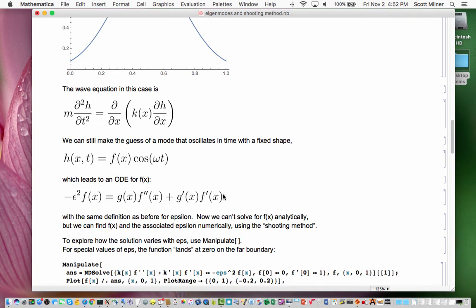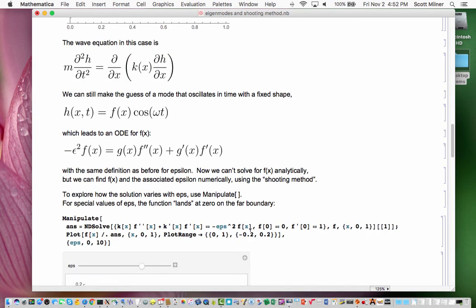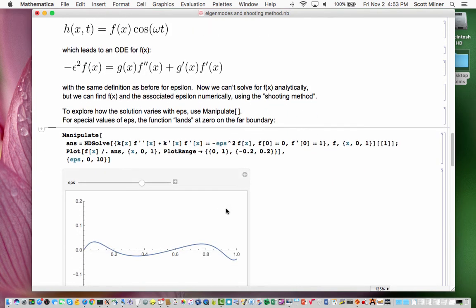so that those solutions satisfy the boundary condition on the far end. And this is the shooting method. So the idea is we solve this, which should be a boundary value problem in which f is 0 on both ends. We solve it as an initial value problem where we take f of 0 equal to 0 on the left end, and also the first derivative equals to 1. That amounts to saying we're going to launch the f sort of like a cannon that you fire on one end, and what you want it to do is to land on the boundary condition on the far side.